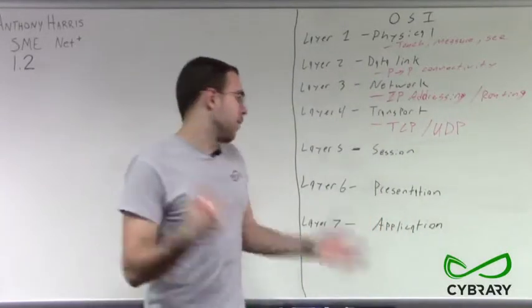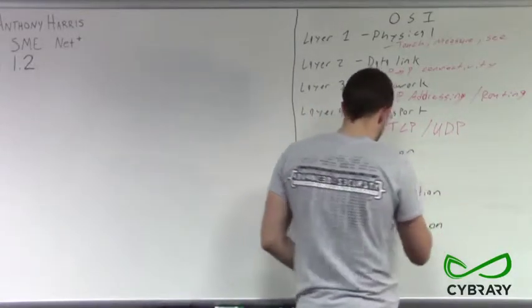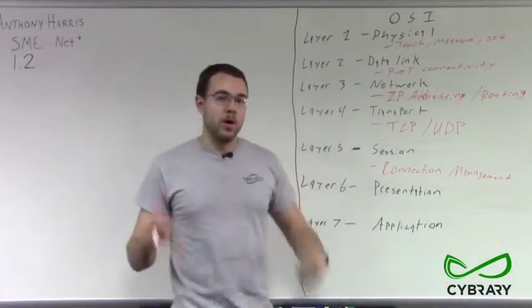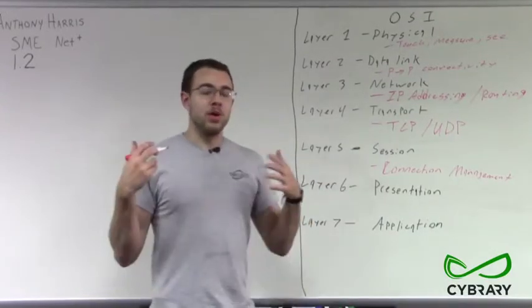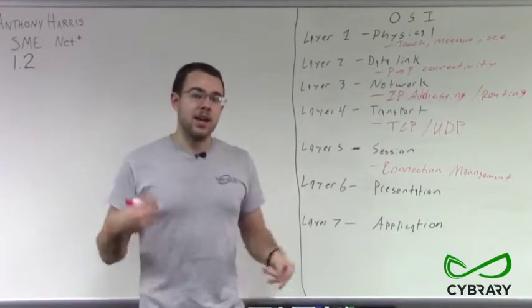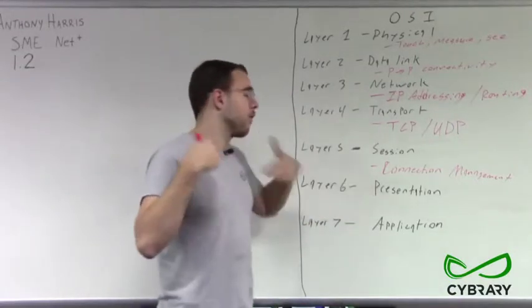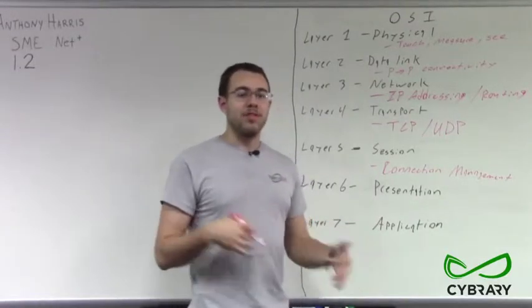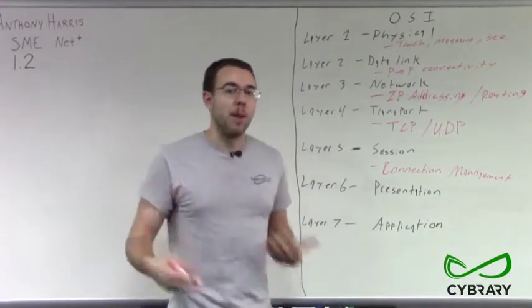Next, we have our layer five, our session layer. Session layer is going to provide our connection management. It's going to perform our initiation. It's going to perform our handshake to establish the connection. It's going to provide maintaining who can talk when, and it's going to provide our termination of our sessions. So establishing, essentially just overseeing our connection, making sure that our computers are talking when they're supposed to, so we're able to receive the message properly, and we're able to establish and terminate connections properly.